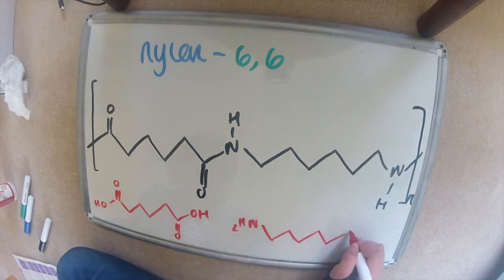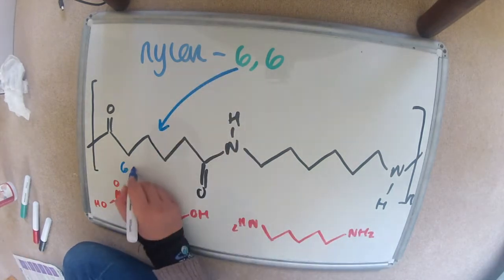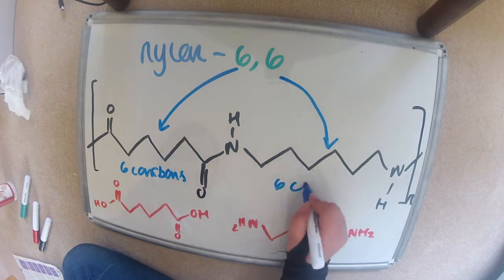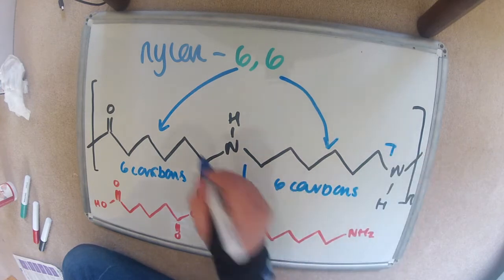So we have a dicarboxylic acid and a diamine and they all have the same number of carbons, which is 6, hence the 6-6.